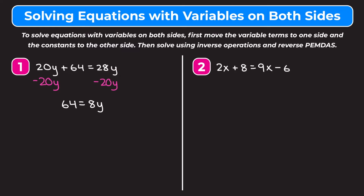Now I just need to get rid of this 8 that is being multiplied by my Y, so I'm going to divide both sides by 8. On the left side, 64 divided by 8 is 8. On the right side, 8 divided by 8 is 1, so I'm left with 1Y, which is the same as Y. So I get that Y is equal to 8.